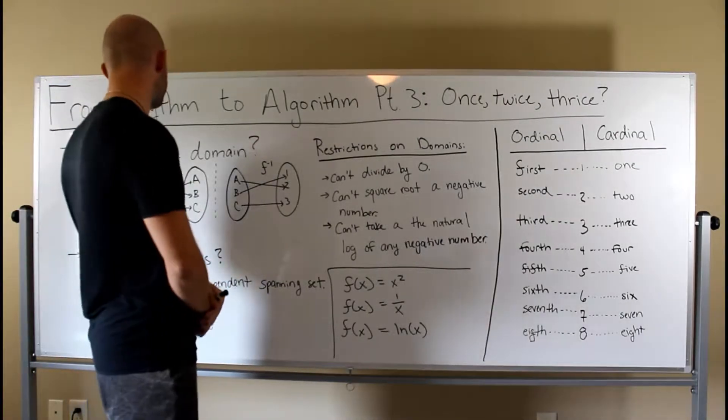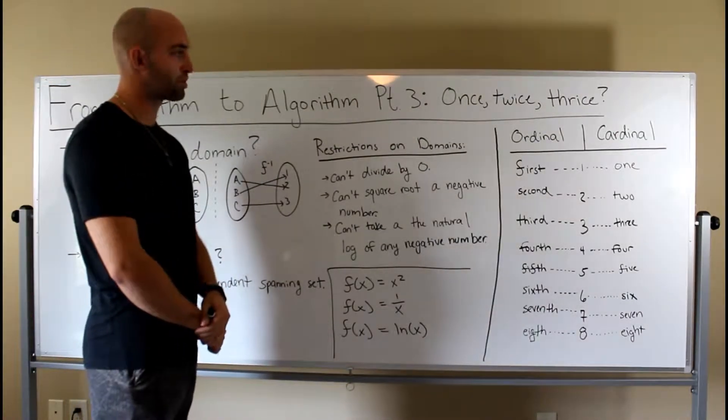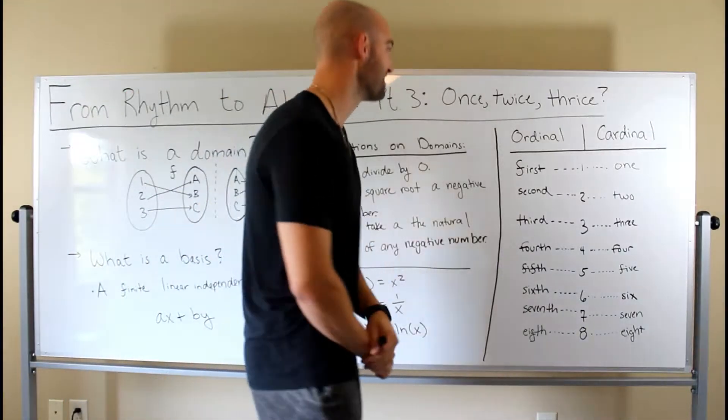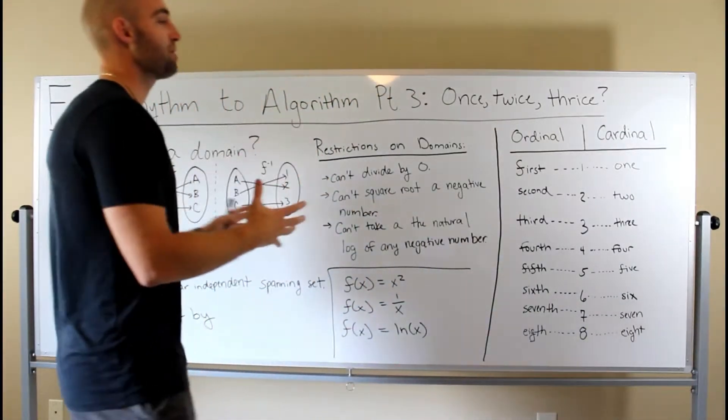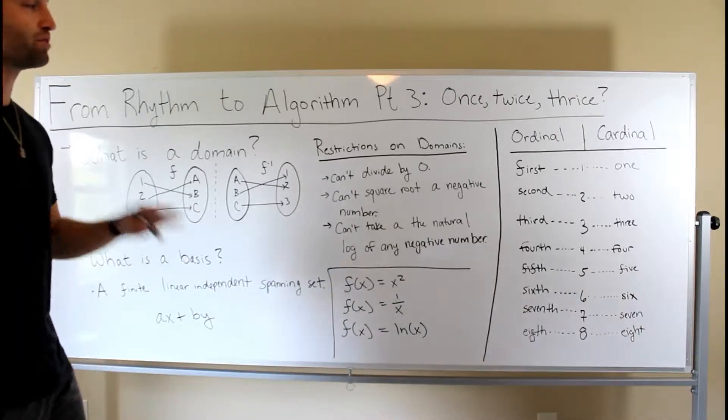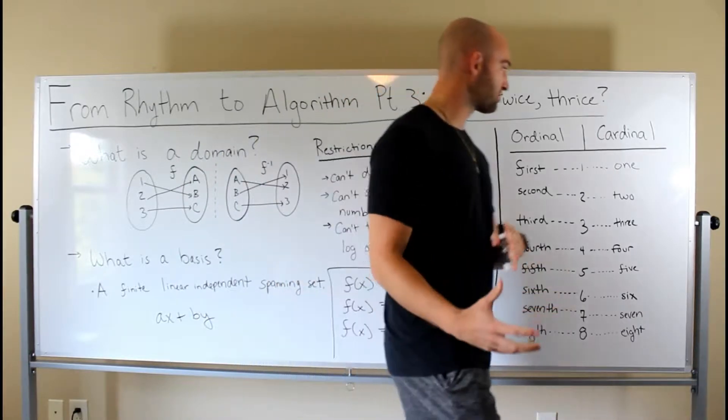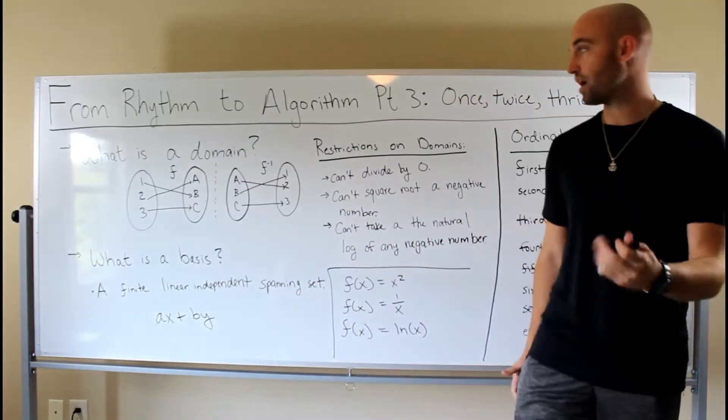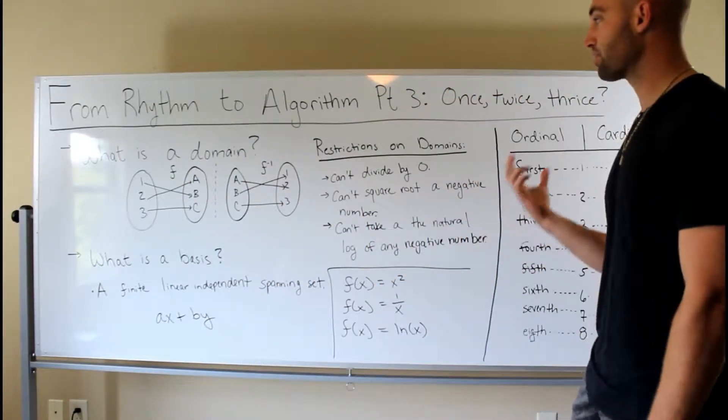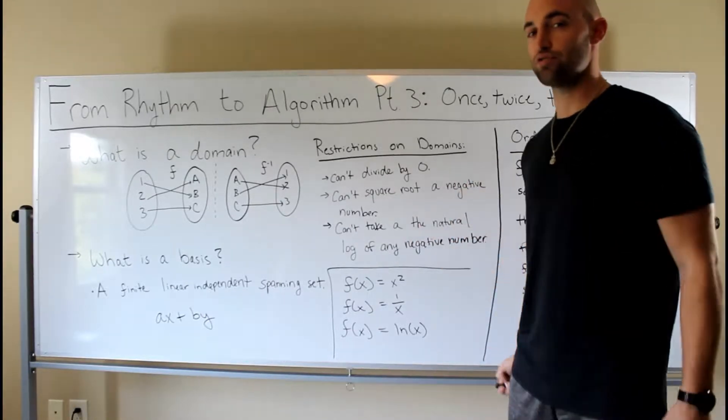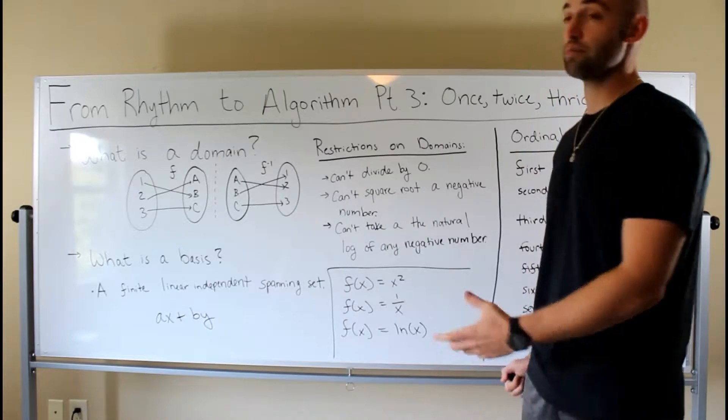Hello everybody and welcome back to From Rhythm to Algorithm Part 3. This one is titled Once, Twice, Thrice. And in this episode we're going to be again reviewing more basics of mathematics. Last episode I said we're going to be doing tension path physics almost. We might jump in there a little bit, probably not, but we're just going to review some more foundations of mathematics and ask some very direct questions that everyone can appreciate pretty immediately with music.